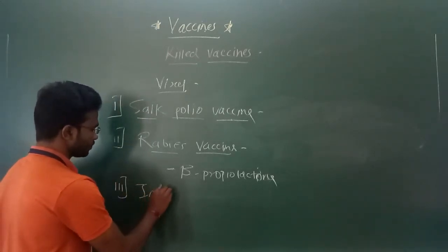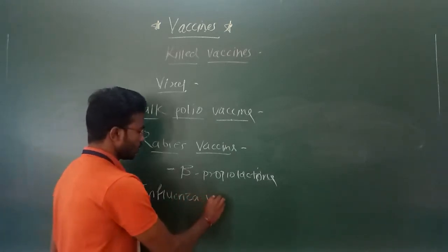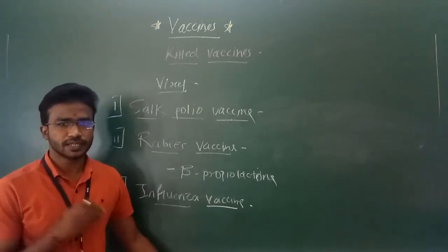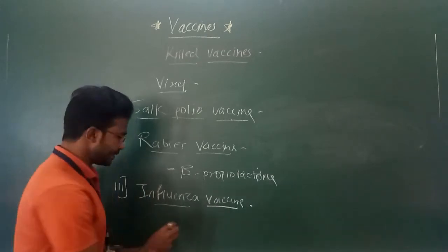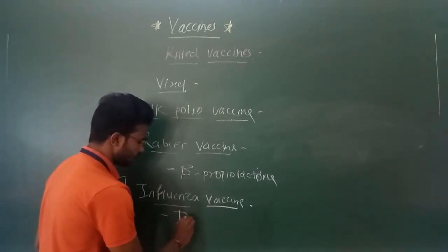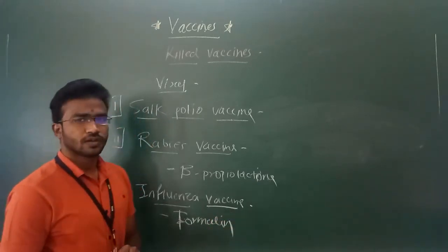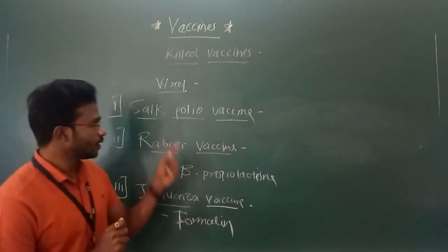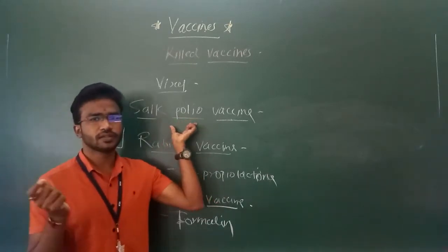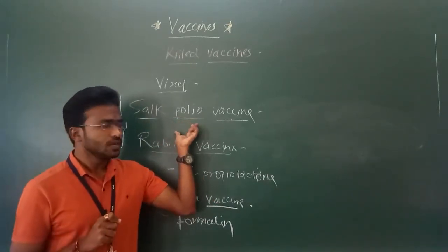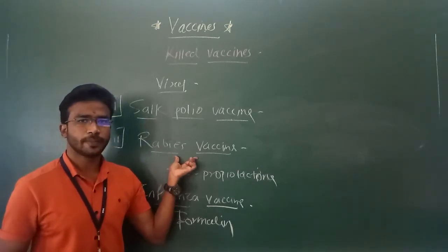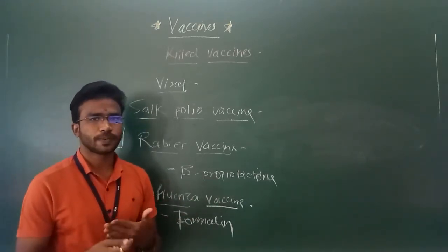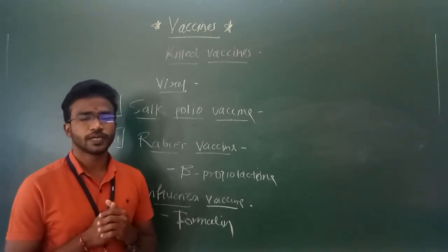The third viral vaccine example is the influenza vaccine. In this case, the influenza virus is inactivated by using formalin. So to summarize the three examples of killed viral vaccines: first, the Salk polio vaccine, prepared by inactivating the polio virus with formalin; second, the rabies vaccine, in which the rabies virus is inactivated with beta-propiolactone; and third, the influenza vaccine, prepared by inactivating the influenza virus with formalin.